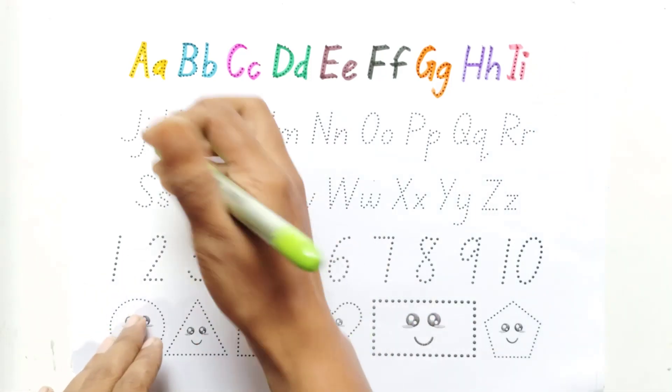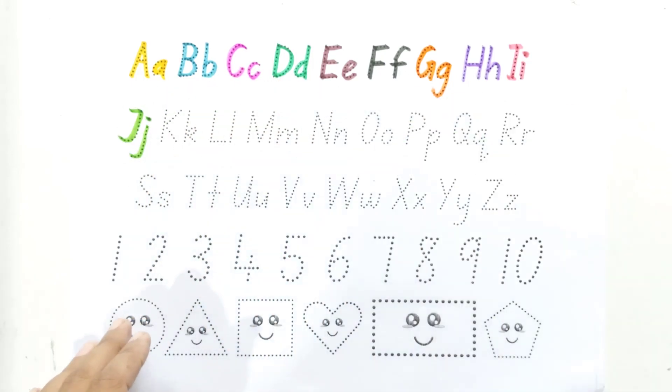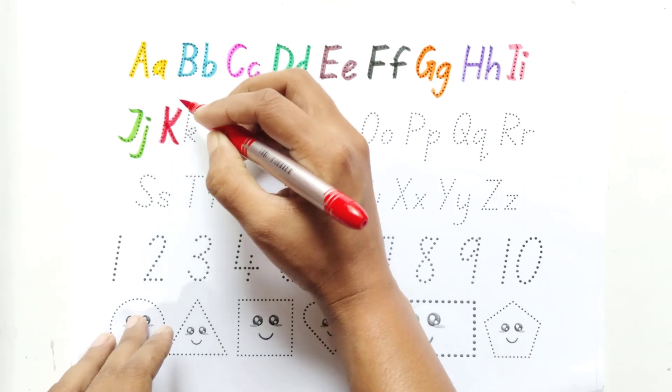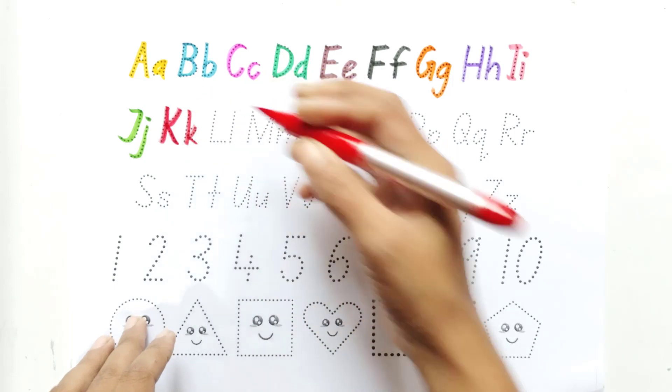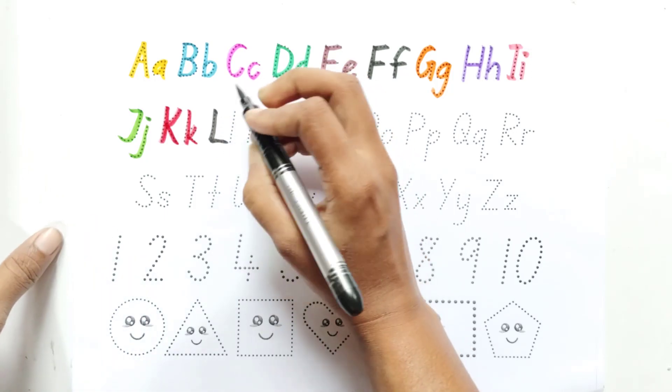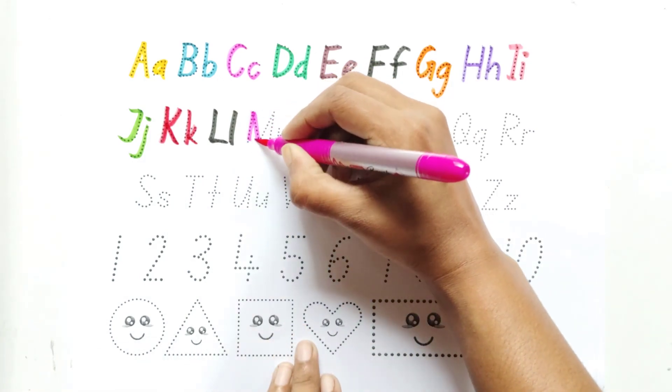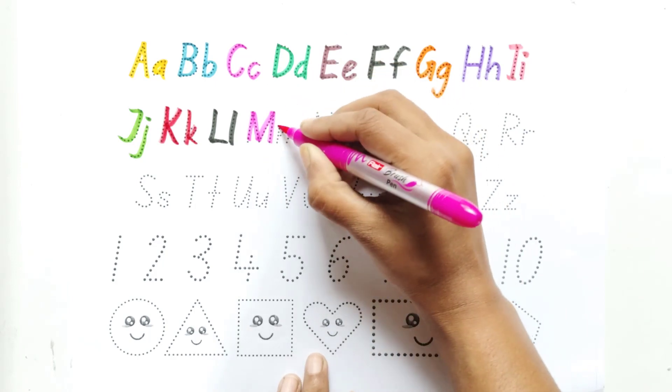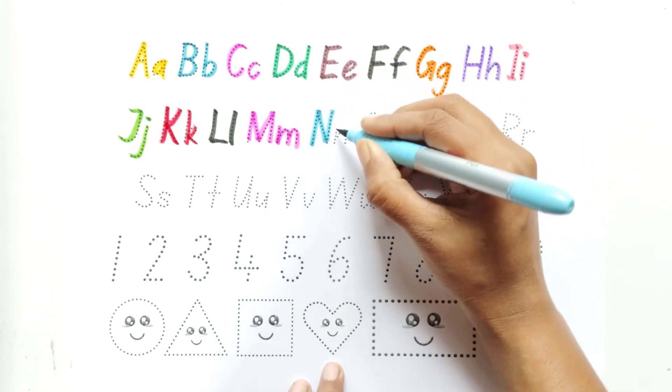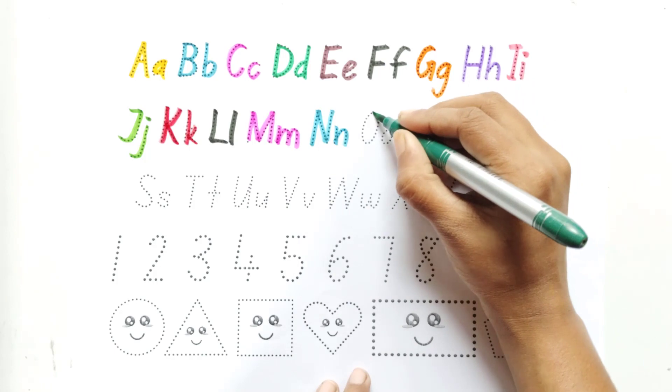Write with me J. Say with me J. Write with me K. Say with me K. Write with me L. Say with me L. Write with me M. Say with me M. Write with me N. Say with me N. Write with me O. Say with me O.